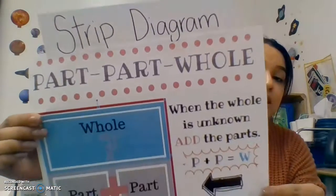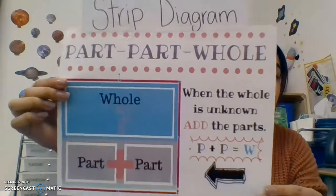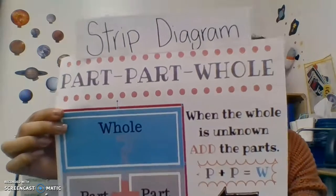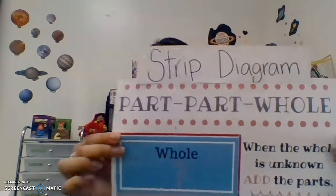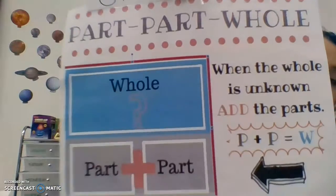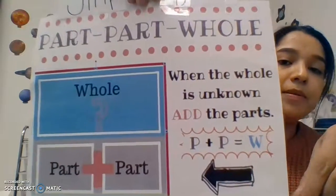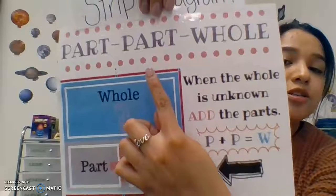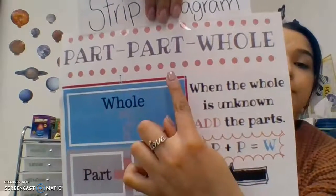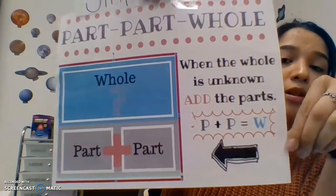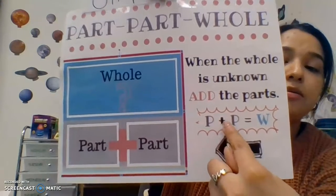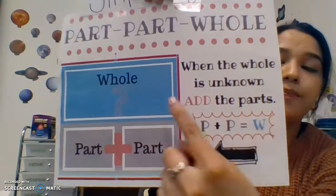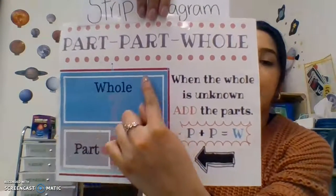Our two new words: the first is strip diagram — everyone say it together: strip diagram, one more time, strip diagram. This is a strip diagram — part, part, whole. When the whole is unknown, you add the parts: part plus part equals whole.